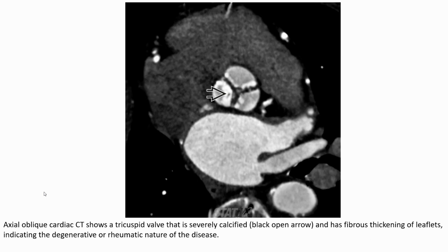This axial oblique cardiac CT shows a tricuspid valve that is severely calcified, and fibrous thickening of the leaflets, indicating the degenerative or rheumatic nature of the disease.